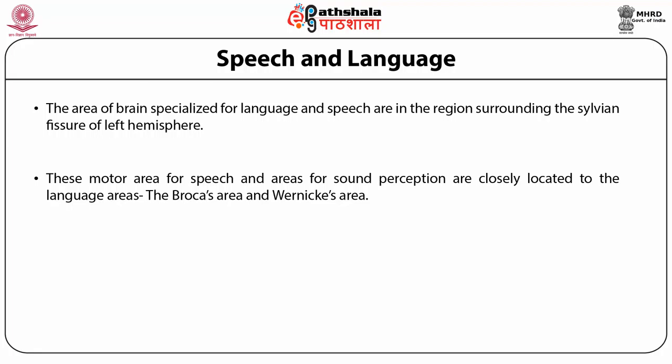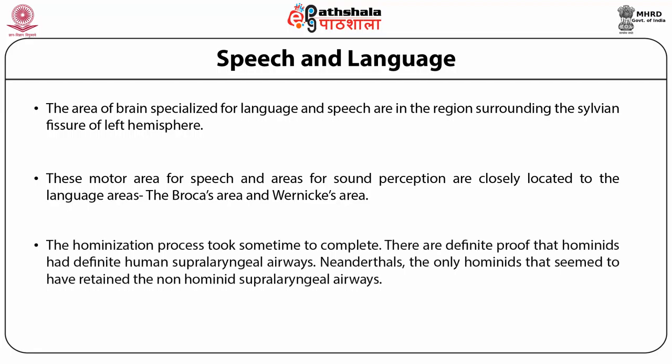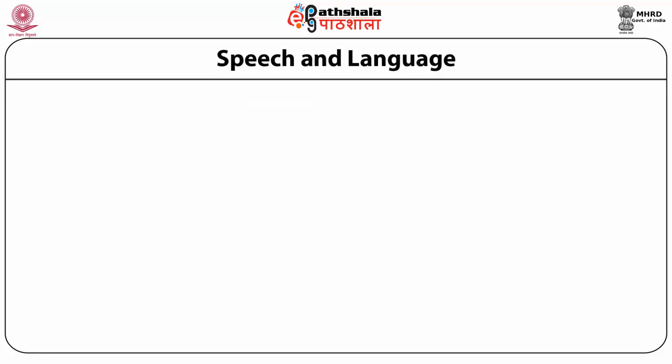The comparative anatomy of living primates and hominid fossils suggests that evolution of the supralaryngeal vocal tract probably started in the early African population of Homo erectus. However, the humanization process took some time to complete. There is definite proof that hominids from Israel sites had human supralaryngeal airways. Endocast studies of some forms indicate that their neural mechanisms had not yet appropriately developed, whereas those from the Israel sites were capable of producing human speech.